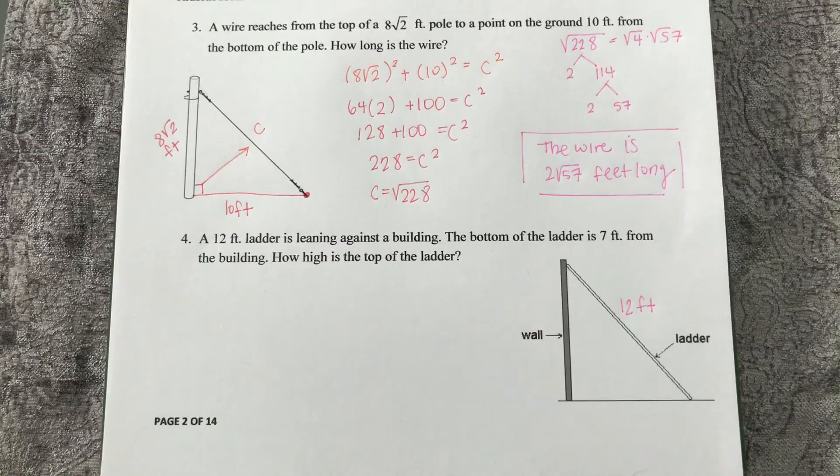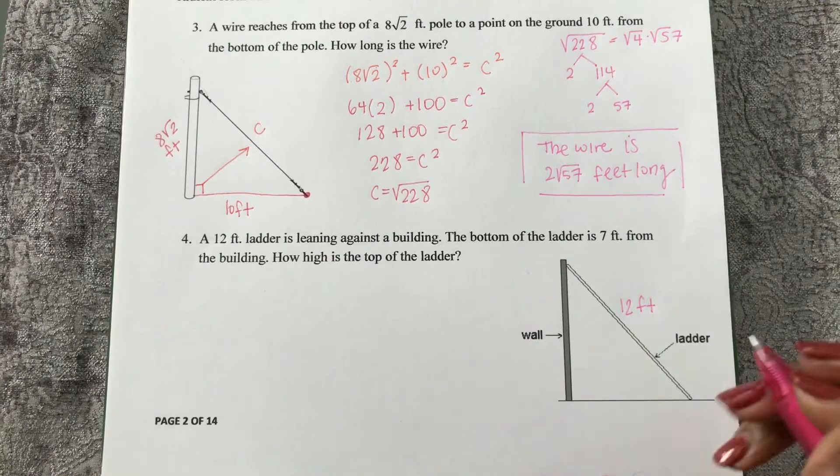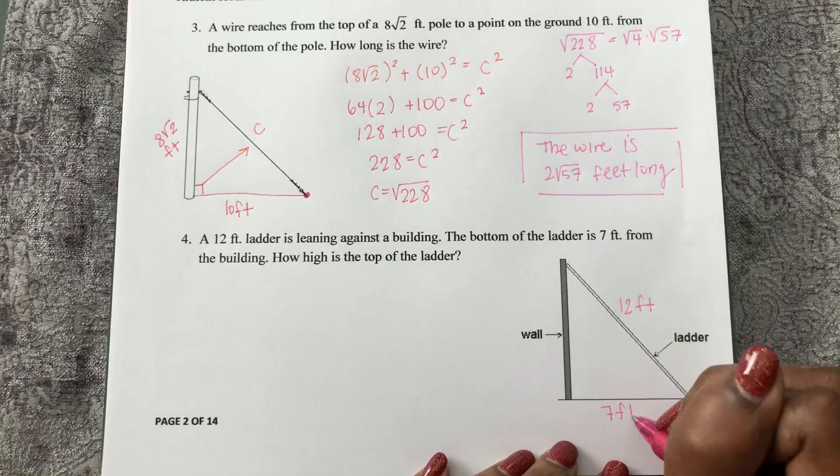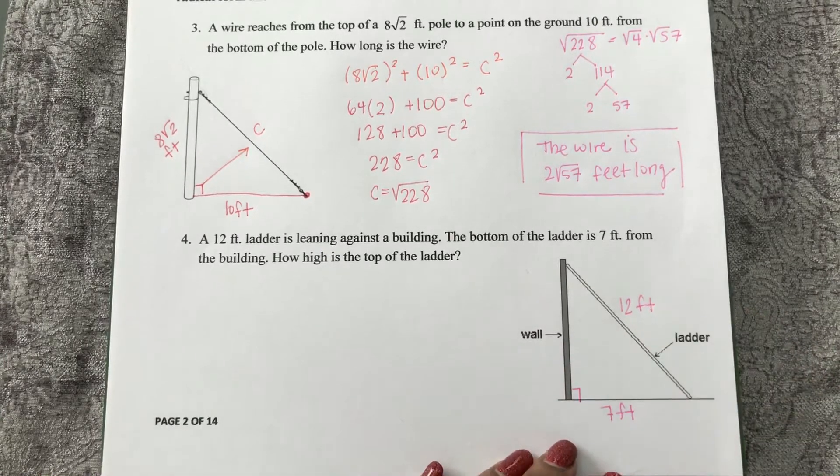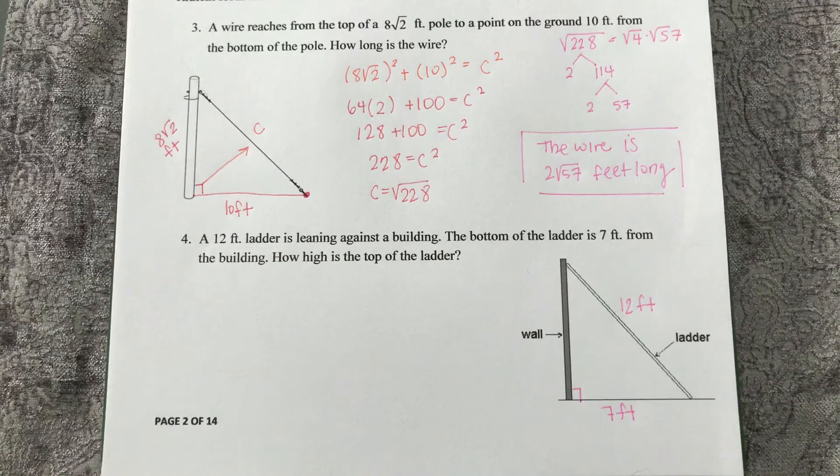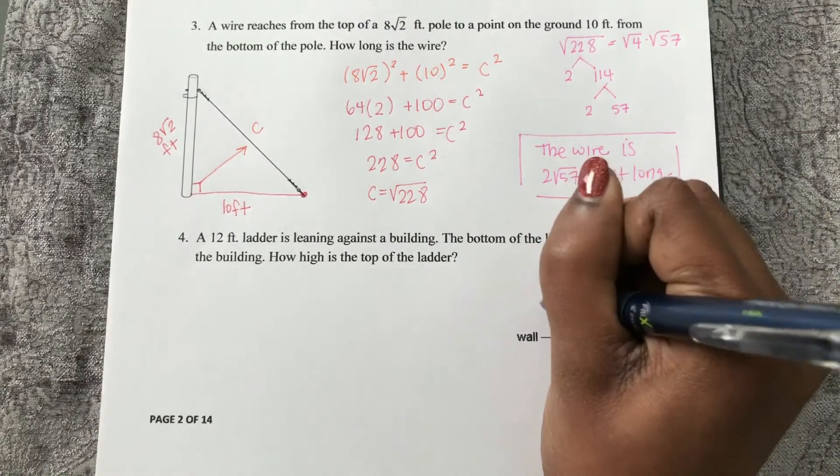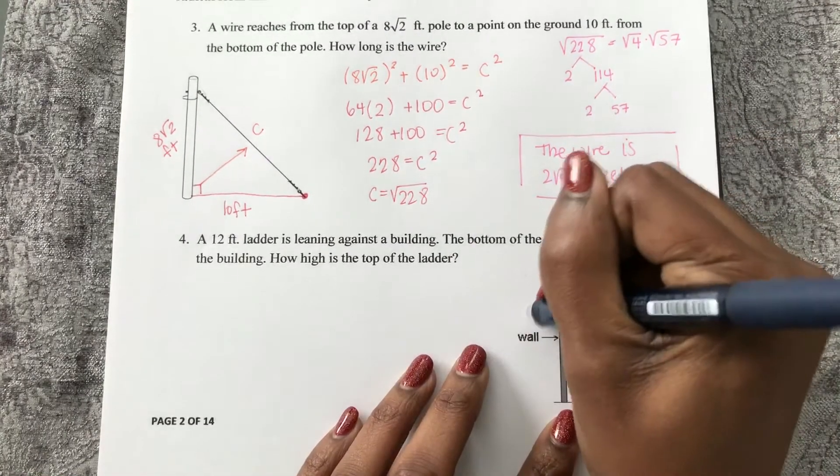The bottom of the ladder is 7 feet from the building. So this is 7 feet. We can see this is a right triangle that's created.